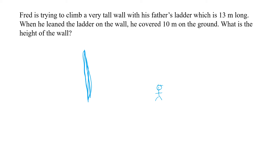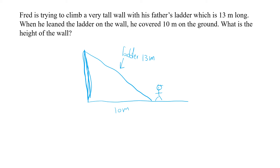Fred is on the ground. Let's draw the ground. Fred has a ladder that is 13 meters long. When he leaned that ladder on the wall, the distance covered on the ground is 10 meters — from where he stood to the base of the wall. The question asks for the height of the wall. Just like that, we have a right angle triangle.